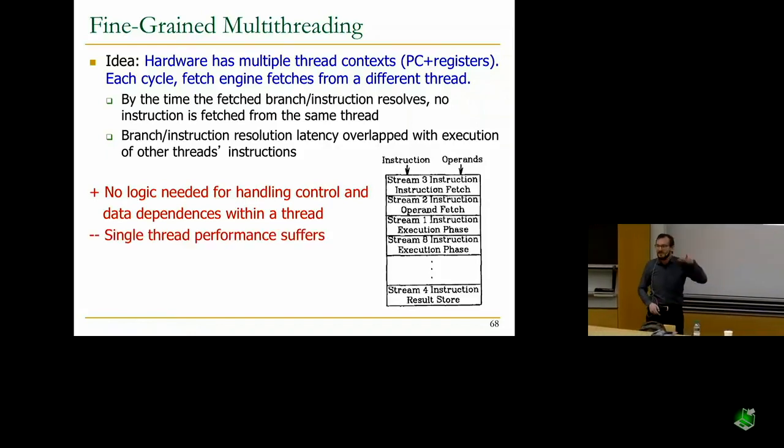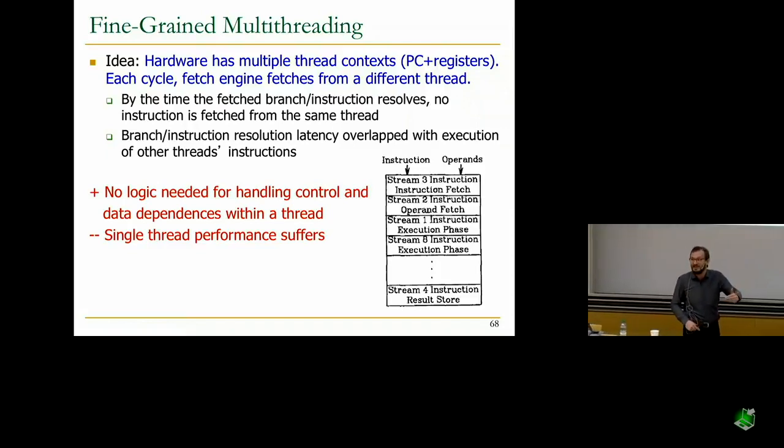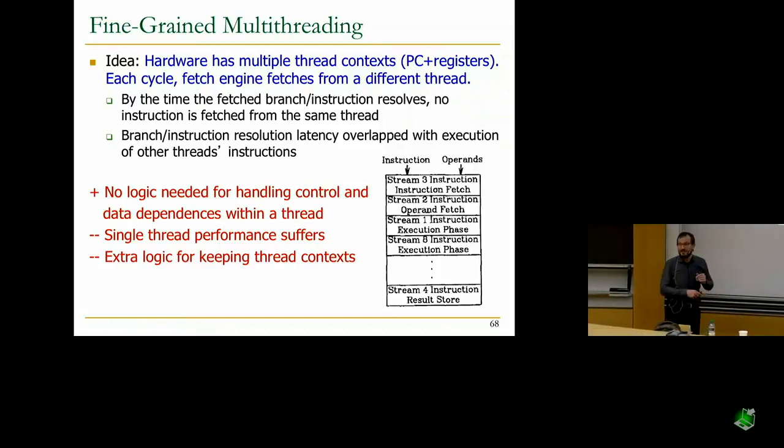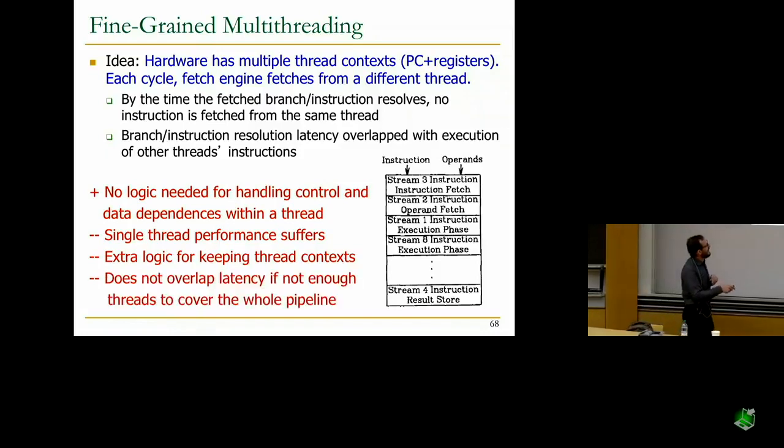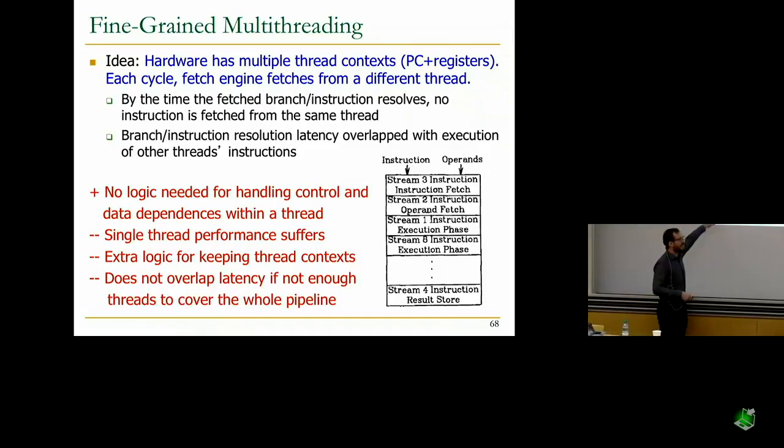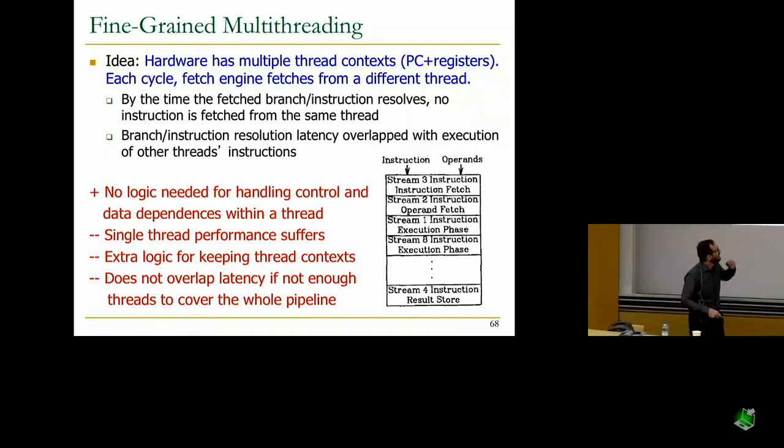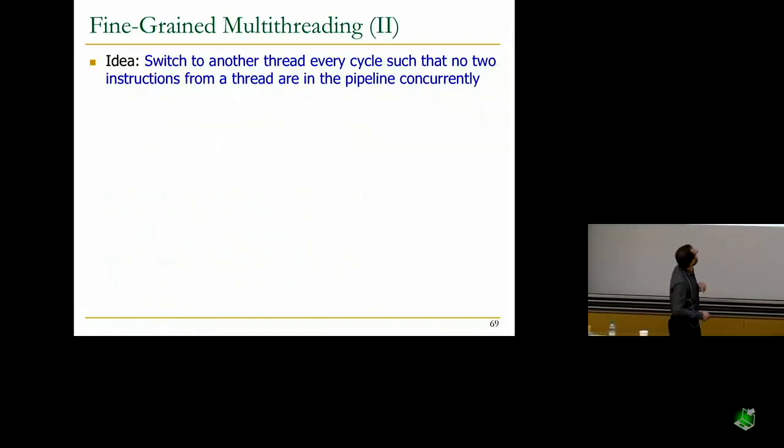The downside is single thread performance suffers because you're fetching one instruction into the pipeline every n cycles, where n is the depth of your pipeline. You need extra logic for keeping thread context. You need program counter and registers. And you do not overlap latency if there are not enough threads to cover the whole pipeline. This model works really well if there are enough threads to cover the pipeline.